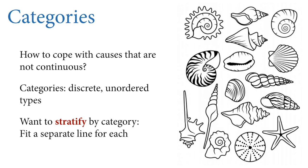There are lots of things in the natural world that are not continuous — they're discrete, unordered types, like different species of seashells. Each type of shell is different; there's not a continuum, and none is more shell than the others. Individual people and nations are also examples of familiar categories. We want to stratify by categories in our data to get at the proper estimates, and in the context of a linear model, stratifying by a category usually means fitting a separate regression line for each category.